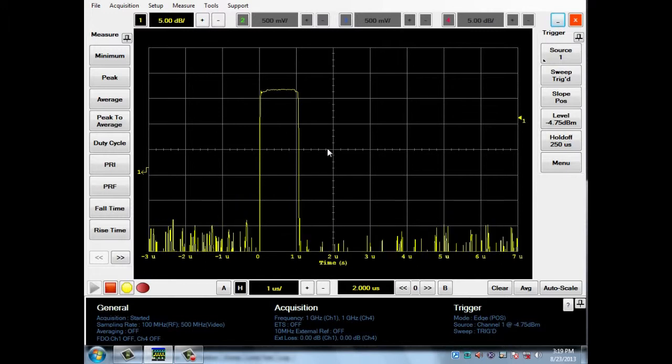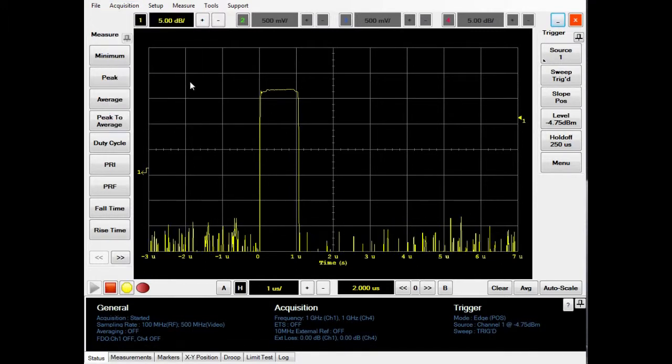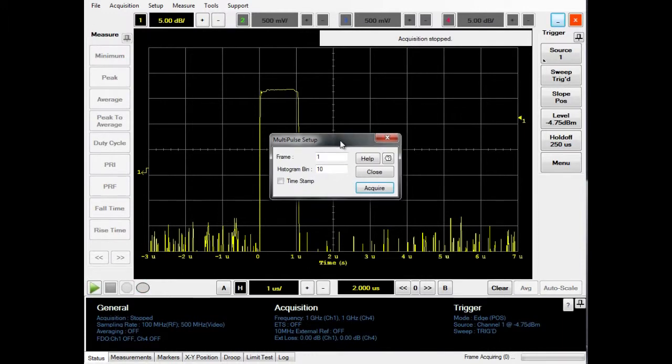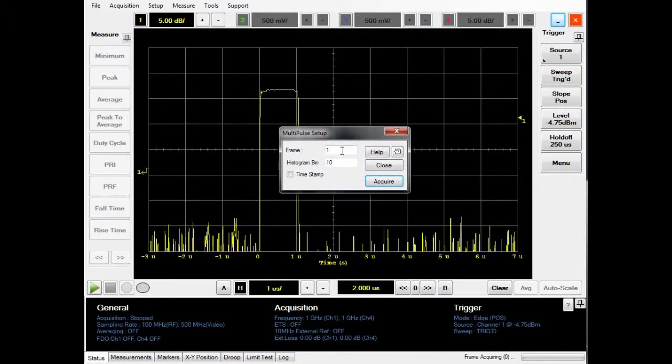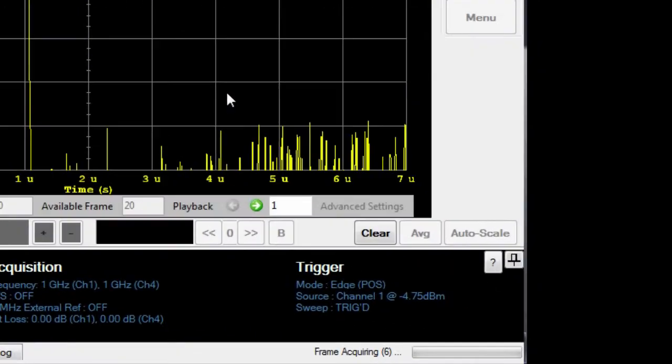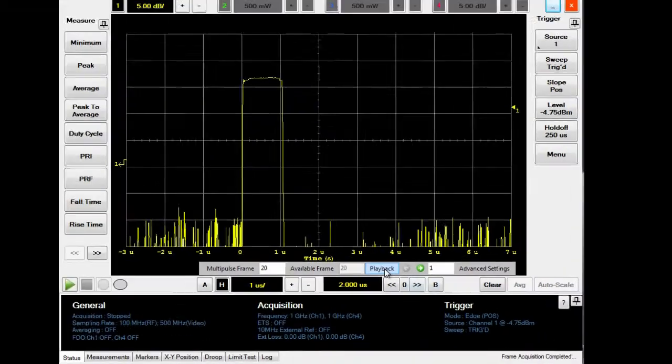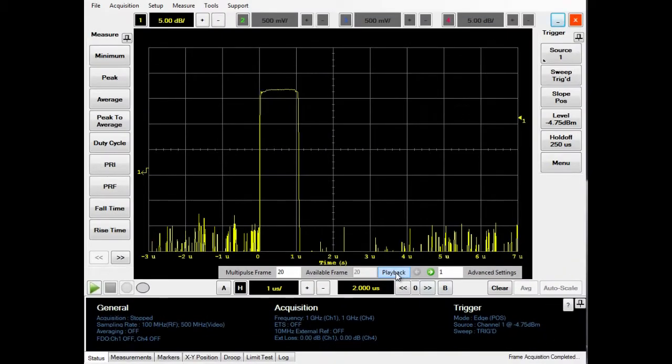To go into multipulse mode, go to the acquisition, select multipulse, and the multipulse setup window will appear. Because we have selected 20 pulses for this demo, enter 20 into the frame, then click acquire. Once the frame acquisition is completed, you can do a playback to view all the individual pulses.